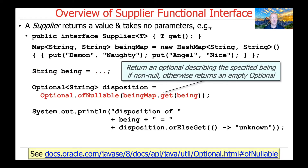We're then going to use an interesting factory method that's part of the Java Optional class. Optional is a class that can be used to avoid having to deal with null values. We'll use the ofNullable method to look up the being map and see whether the being name or type we input is actually in the map. If it is in the map, we'll get the disposition associated with it. But if it's not, we'll get back null, and the Optional ofNullable factory method will create an Optional that shields the rest of the program from whether the get method called on the HashMap returned null.